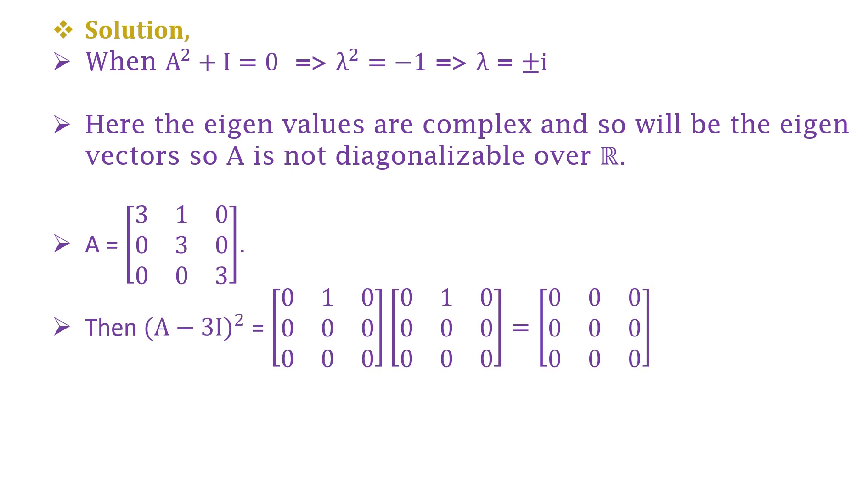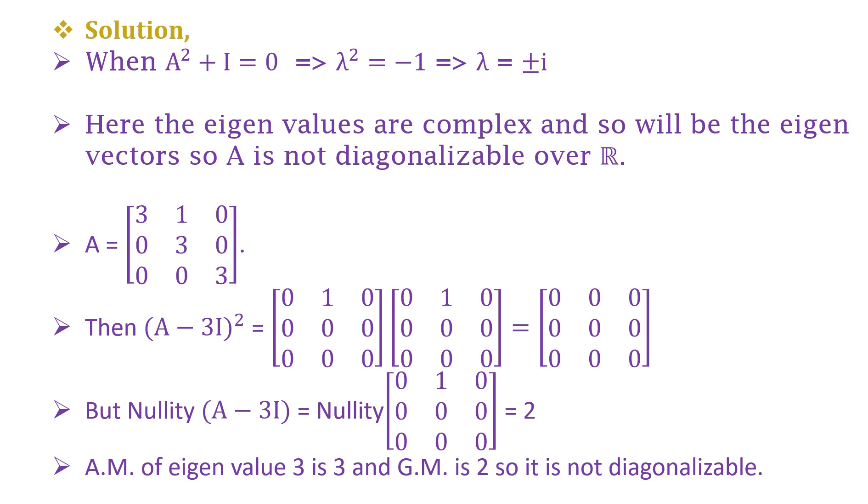But here the nullity of (A - 3I) is two, which means that the arithmetic multiplicity of eigenvalue 3 is three and the geometric multiplicity is two, so it is not diagonalizable.